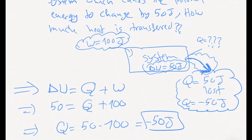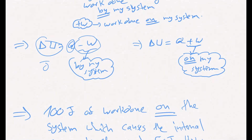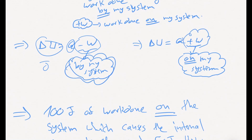To recap: for the sign of work, do not get into the conflict between different representations. Simply take minus W as work done by your system, and plus W as work done on your system, and apply the formula straightforwardly.